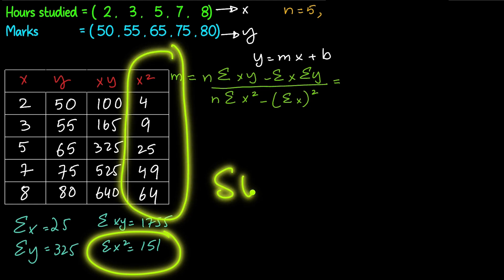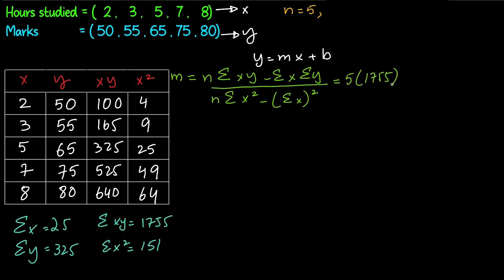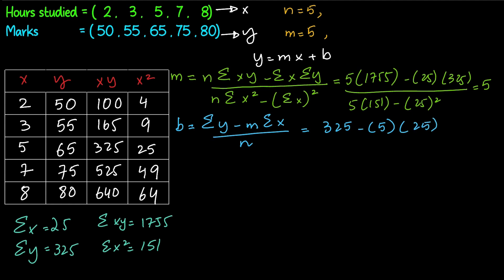We just need to put these numbers into the formula for m, and we get 5. So m = 5. Now to find b, we have a formula which is sum of y minus m times sum of x, all divided by n. We just put the numbers into the formula and get 40.